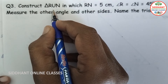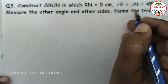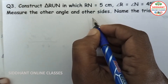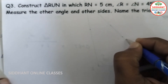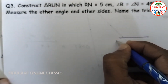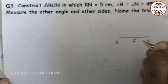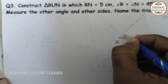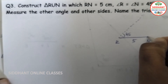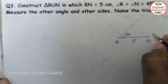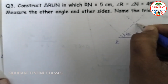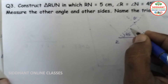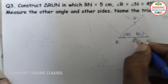Question number 3. Construct triangle RUN in which RN is 5 centimeters and angle R equals 45 degrees. Measure the other angles and sides and name the triangle. In the rough figure, RN is 5 centimeters; from R we take 45 degrees and from N we take 45 degrees. Extending these lines gives intersection point U, and joining RU and UN gives triangle RUN.